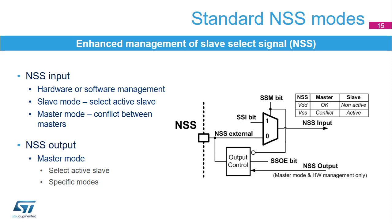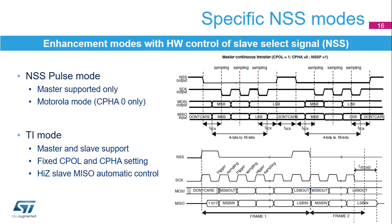As a slave input, it is used to identify itself as the active slave for communication. As a master input, it signalizes a potential conflict between masters in a multi-master system. The NSS only works as an output in master mode and is managed by hardware in a standard or specific control mode. Additional slave select outputs can be provided by the GPIOs under software control. There are a few enhanced modes when the slave select signal is under specific hardware control. The slave select signal can operate in a pulse mode where the master generates pulses on the signal between data frames.